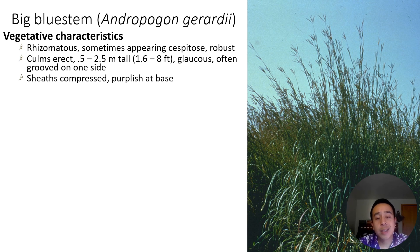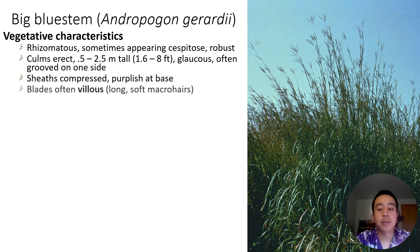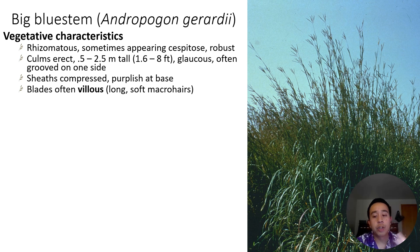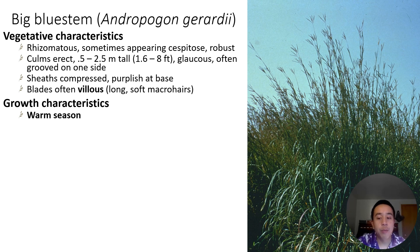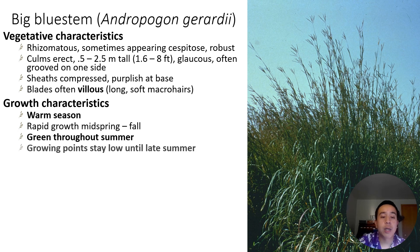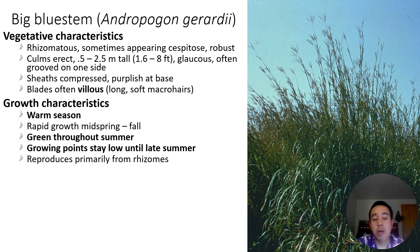The sheaths are typically compressed to the culm, and they're often purplish at the base. The blades are often what we call villous — long and soft macro hairs — and you can see the leaf blades in the image; they kind of look like big strands of hair. It's a warm season grass, which is different from many of the grasses reviewed so far. It typically has rapid growth mid-spring and fall, and growing points stay low until late summer. It usually reproduces primarily from rhizomes — underground stems that pop up and allow for new cespitose bunches of bluestem.